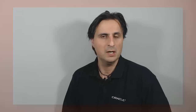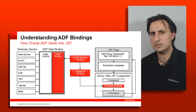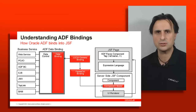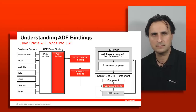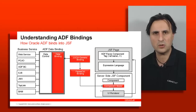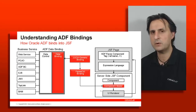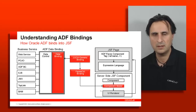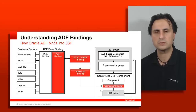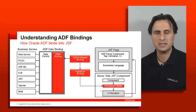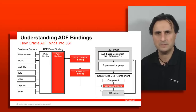Before we go into the details we need to be aware of what exactly is the binding layer and how does it look at runtime. At design time the binding layer is all about metadata. Every page that you drag and drop components from the data control palette to will be associated with the page definition file, which contains metadata objects that represent the component binding for a specific user interface component. On the other side of the binding is the data control, and through the data control we talk to the business service. You can look at the binding layer as the glue that exists between the user interface component and the business service.